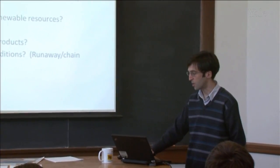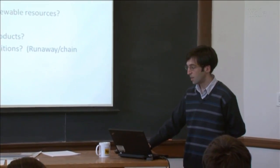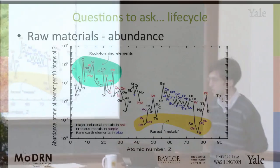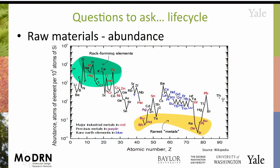You have to ask all these questions, and then apply them at different parts of the life cycle. You almost have to consider the catalyst itself as a chemical product that you would think of ordinarily — going through the life cycle of raw materials, manufacturing, use, and end of life.